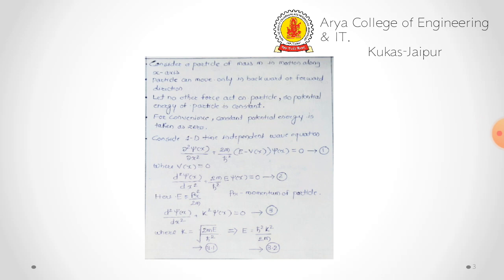For the derivation, we consider a particle of mass m moving along the x direction. The particle can move only in the backward and forward direction because we are considering one dimension only. Let no other force act on the particle, so the potential energy is constant. For convenience, constant potential energy is taken as 0, so V(x) equals 0.